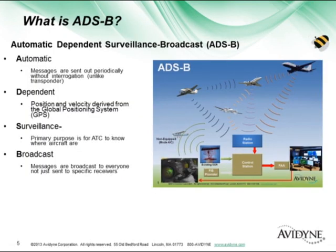So what is ADS-B? ADS-B stands for Automatic Dependent Surveillance Broadcast. It's automatic in that you're automatically sending out your position information on a regular basis without being interrogated, unlike a transponder. It's dependent on GPS — we need to have a precision GPS position. It's surveillance, used by ATC to do traffic separation. And it's broadcast in that everybody is broadcasting their position.